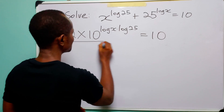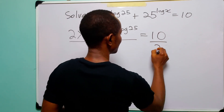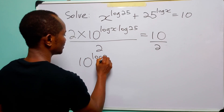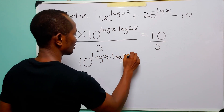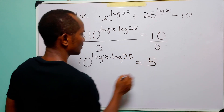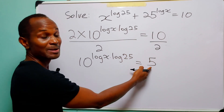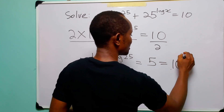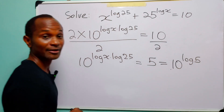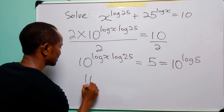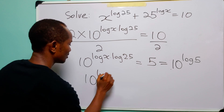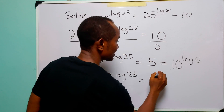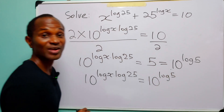Dividing both sides of this equation by 2, we have that 10 to the power log x multiplied by log 25 is equal to 5. Once more, remember that 5 can be written as 10 to the power log 5. So we have 10 to the power log x multiplied by log 25 is equal to 10 to the power log 5.